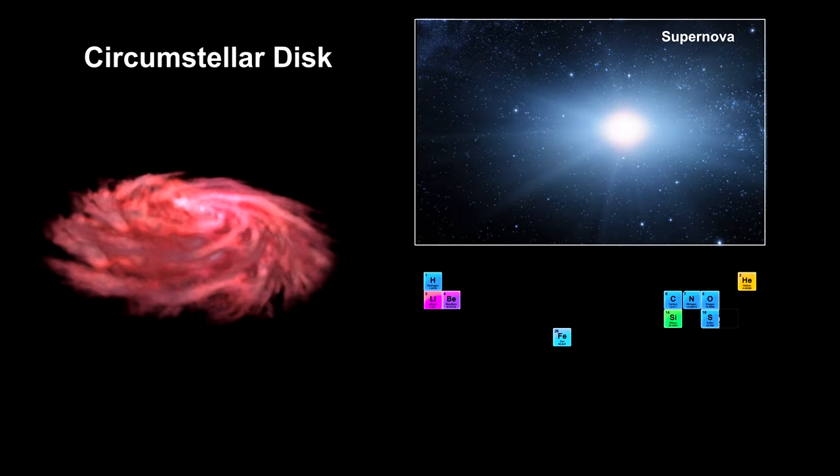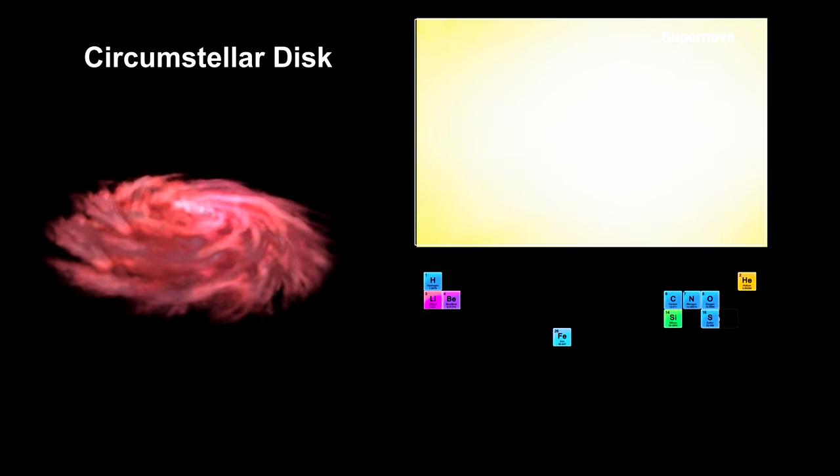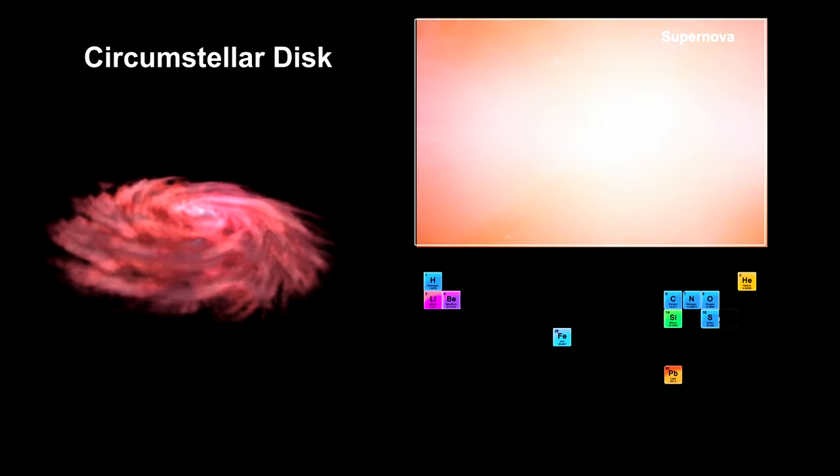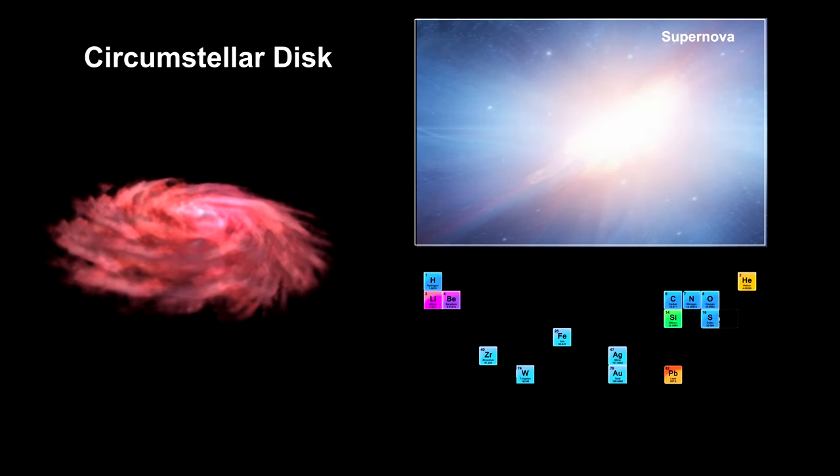Supernova explosions occur when supermassive stars run out of hydrogen. These seed even heavier elements into the interstellar medium like lead, zirconium, silver, tungsten, and gold.